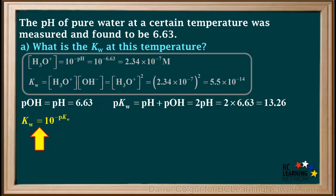We know that Kw is equal to 10 to the negative pKw, which is 10 to the negative 13.26, or 5.5 times 10 to the negative 14, which is the same answer we got using the first method.